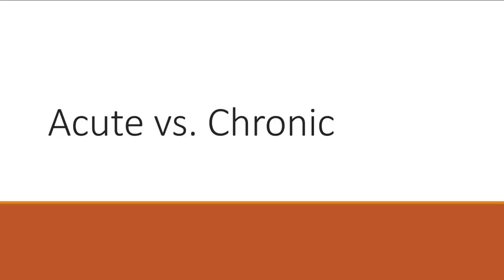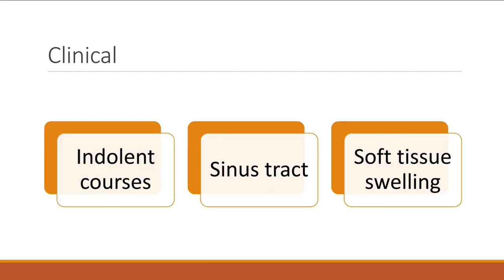In chronic contiguous osteomyelitis, you see indolent course, sinus tracts, and soft tissue swelling. These are patients who had old trauma or an old prosthetic joint that hasn't been properly managed. Sometimes they were on antibiotics, got better, then got worse. I sometimes see patients who have had a prosthetic joint infection for two years with draining sinuses that nobody properly addressed.